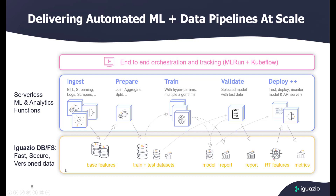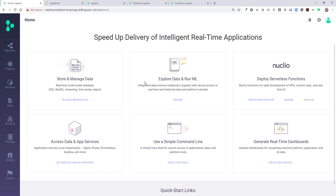The data layer, which is very high performance and involves a database and a file system that can be shared across all those microservices above. The next layer is a serverless function layer, where you can run real-time and batch jobs for various tasks such as ingestion from various sources, data preparation, training using multiple algorithms and parameters in parallel, validation of those models, and finally deployment of those models to real-time serverless functions and APIs that can serve our application data. On top of that, you have an orchestration layer using ML Run, an open-source project, and Kubeflow, which can automate our entire pipeline. This is the Iguazio self-service data science portal, where we can manage data, run analytics, and machine learning tasks, and control many services which are open-source and managed through our service.